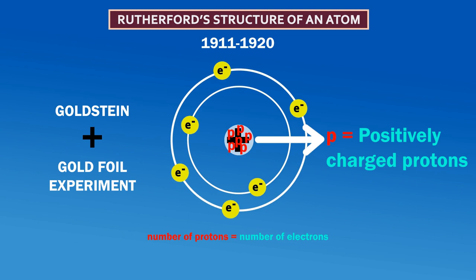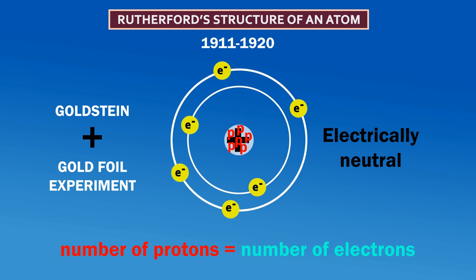In an atom, the number of protons are equal to the number of electrons, and thus an atom is naturally neutral.